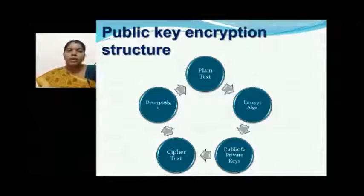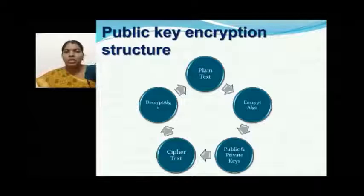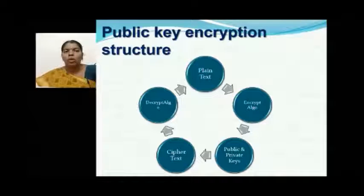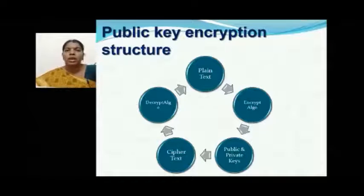Plain text is simply the original message the sender wishes to send. The encryption algorithm converts the plain text into ciphertext, for which we need keys. In public key encryption we need two different keys — a public key and a private key — which are usually a pair. Ciphertext is the unreadable code of the plain text. The decryption algorithm generates plain text from the ciphertext using either the public or private key.